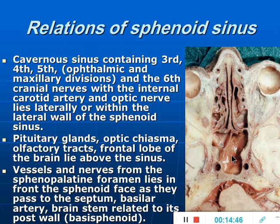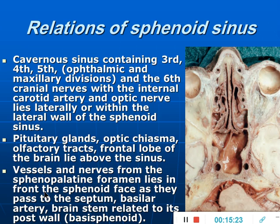The sphenoid sinus lies in an important area in the center of the skull base. It is related to the cavernous sinus with its nerves — third, fourth, and fifth cranial nerves — including the ophthalmic and maxillary divisions of the fifth nerve, and the sixth cranial nerve, along with the internal carotid artery and the optic nerve laterally within the lateral wall of the sphenoid sinus. Above the sinus lie the pituitary gland, optic chiasm, olfactory tracts, and frontal lobe of the brain. The basilar artery and brain stem are related to its posterior wall, called the basal sphenoid.